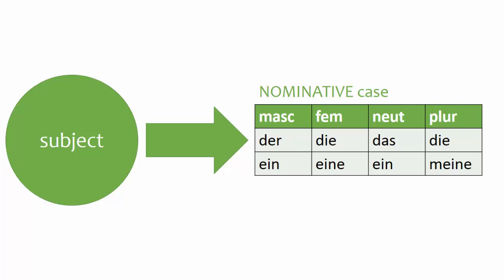Remember that some articles take the same endings as der, die, and das, while others take the same endings as ein and eine. If you need a refresher on which words take which endings, just do a quick search for die words and ein words.